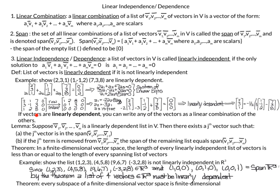If vectors are linearly dependent, you can write any one of the vectors as a linear combination of the others. We have this lemma: suppose v1, v2, ..., vm are linearly dependent vectors in vector space V. Then there exists a jth vector such that (1) the jth vector is in the span of the previous j-1 vectors, and (2) if the jth vector is removed from the list, the span of the remaining list equals the span of the full list v1, v2, ..., vm.